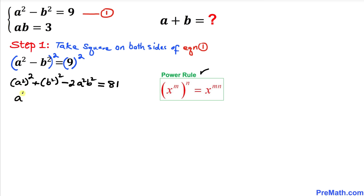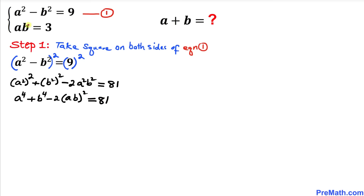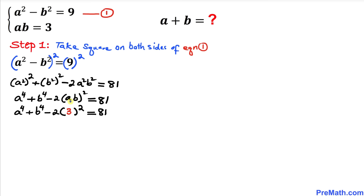This becomes a to the power 4 plus b to the power 4, minus 2 times a squared b squared, which can be written as (ab) squared, equals 81. We know that a times b is 3, so we replace a times b with 3.